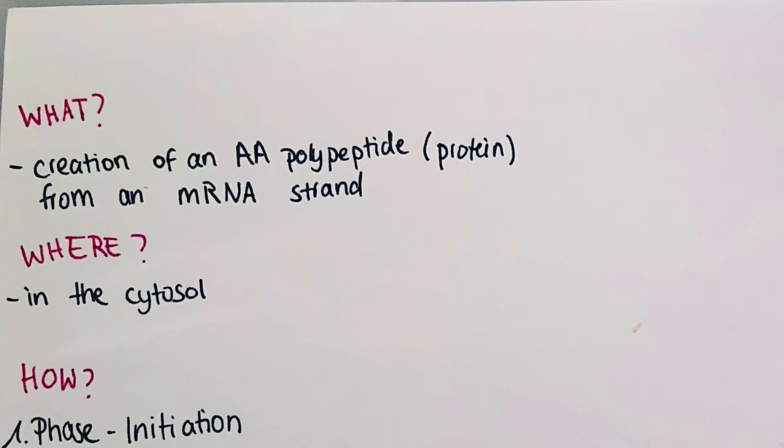Hello and welcome back to this channel. My name is Victoria and today we're going to talk about translation. So what is the purpose of this process? It is the creation of an amino acid polypeptide or a protein from an mRNA strand and it takes place in the cytosol of the cell.